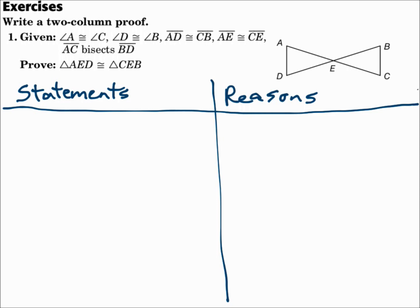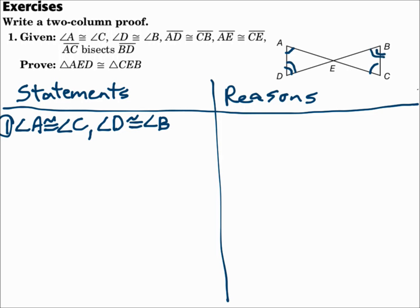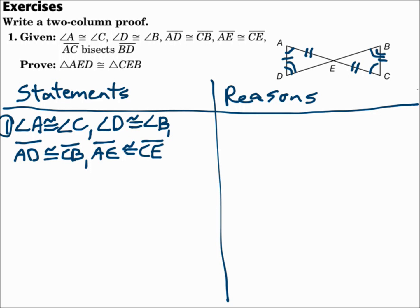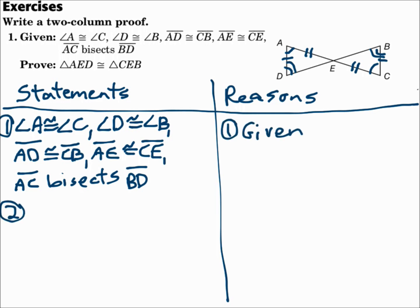Let's start with what we're given. Angle A is congruent to angle C — mark those in the picture. Angle D is congruent to angle B — put a double arc on those. Segment AD is congruent to segment CB — mark those segments. Segment AE is congruent to segment CE — mark those segments. And segment AC bisects segment BD, and we know that's true because it was given to us.